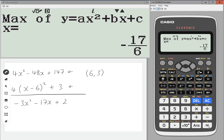Press equals again. And we get -17/6. So this is the maximum point now. It's still the vertex. Equals. And we get 313/12.